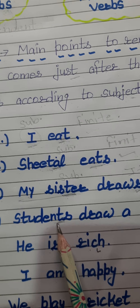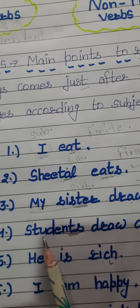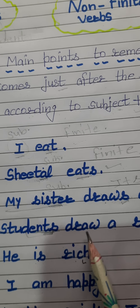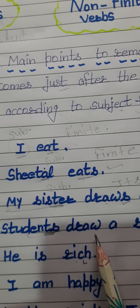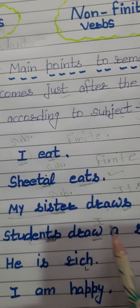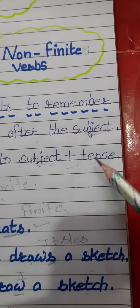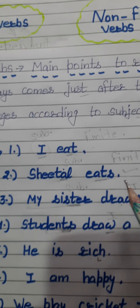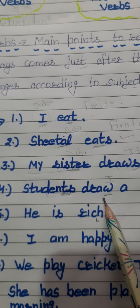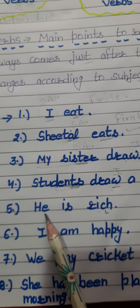At number four: 'Students draw a sketch.' Here 'students' is the subject, but it is plural, not singular. So we see that our finite verb changes its structure — we now apply only the first form of the verb. The finite verb gets changed according to the subject. With a plural subject, we use 'draw' without 's' or 'es.'